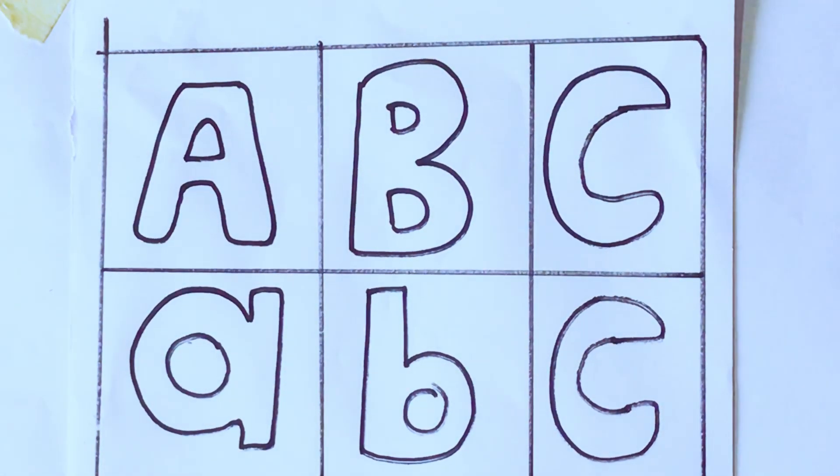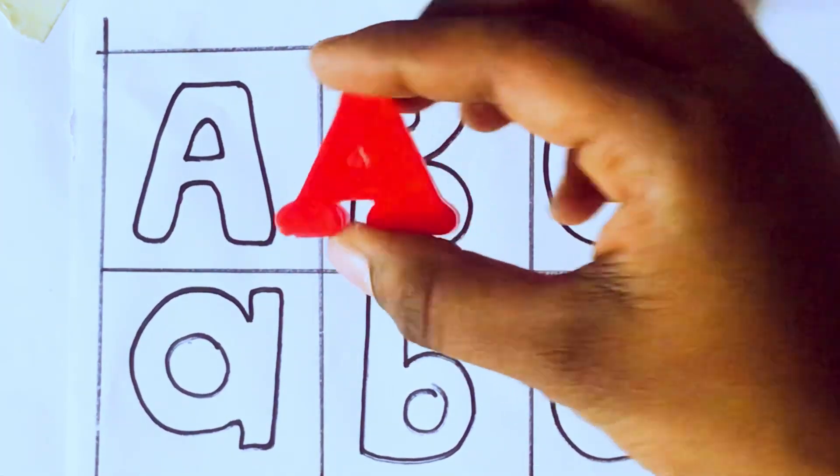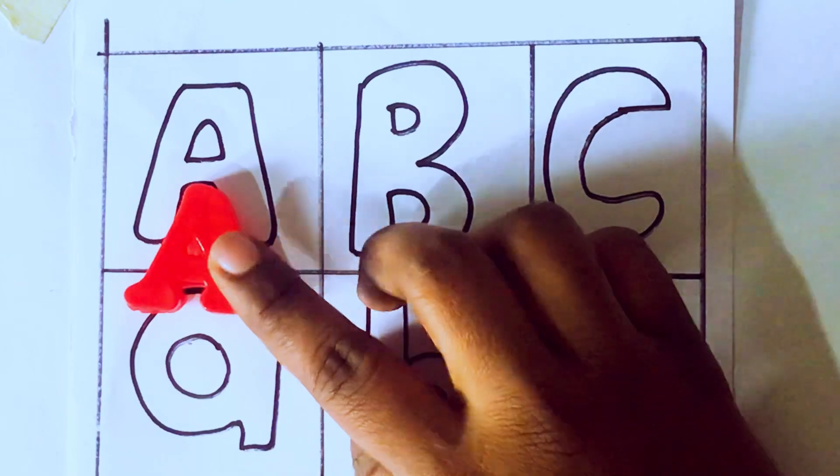Let's learn with you the toy. First of all, A. Which letter kids? A. A for apple. A-P-P-L-E, apple.